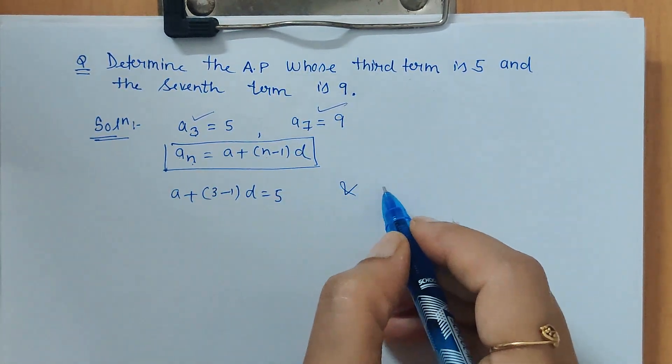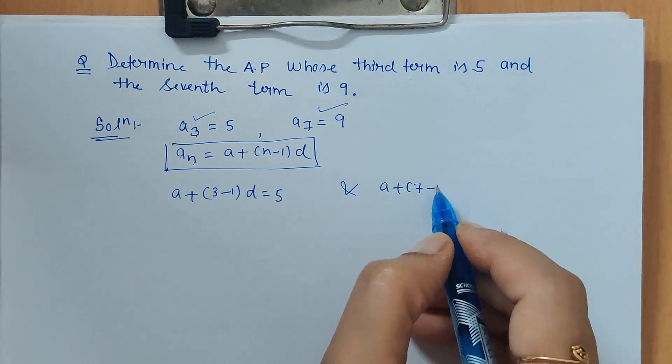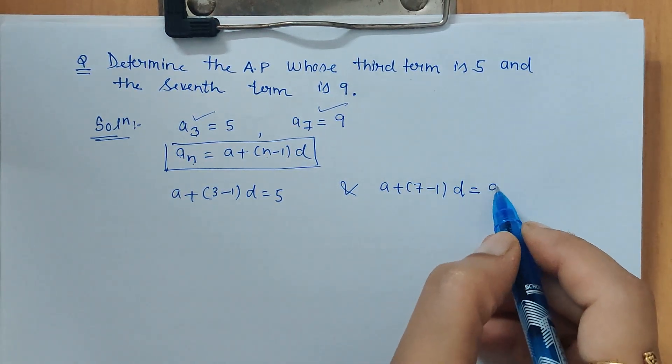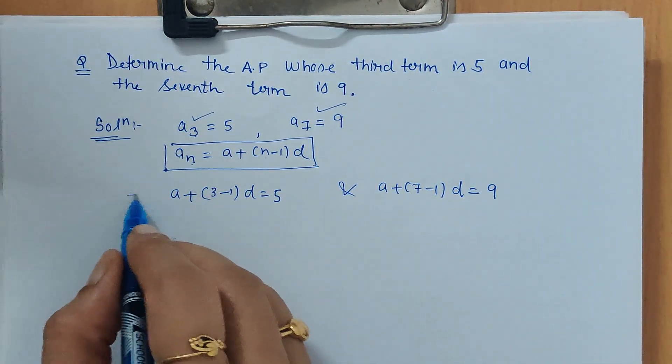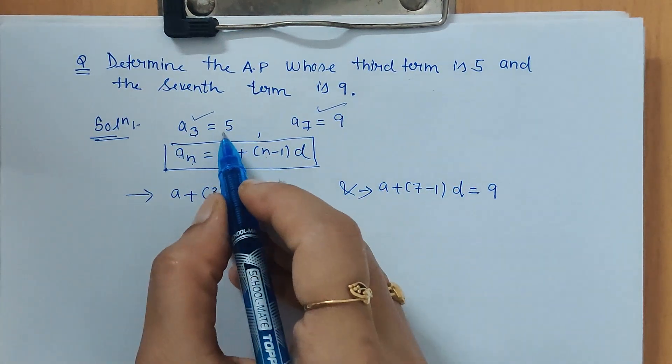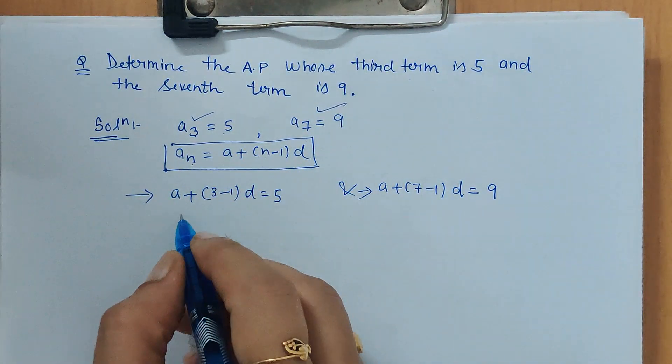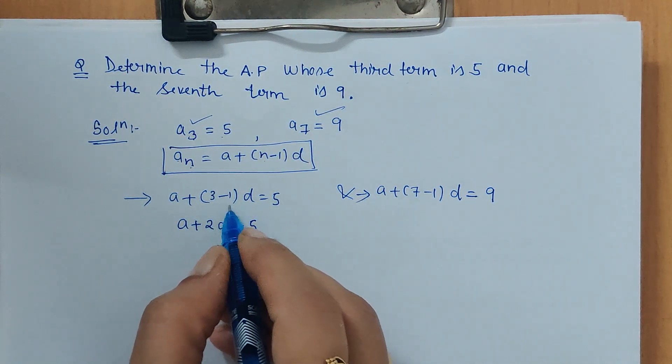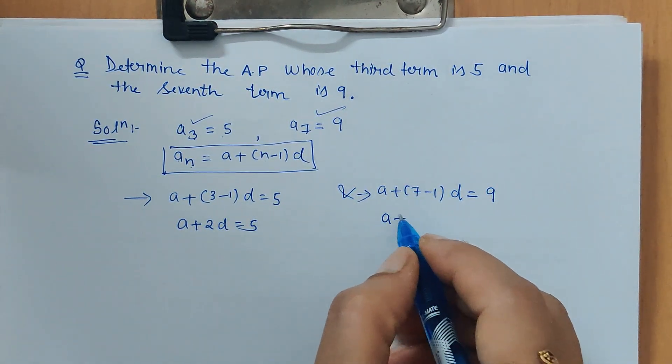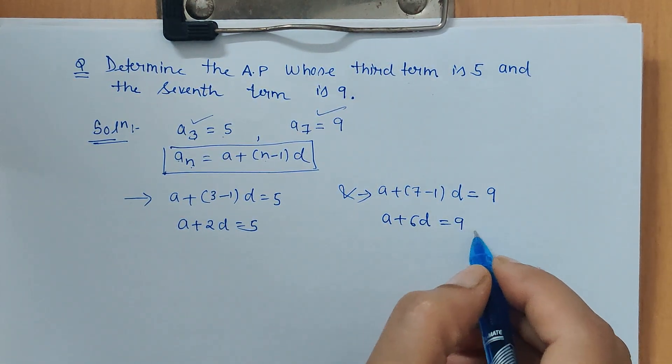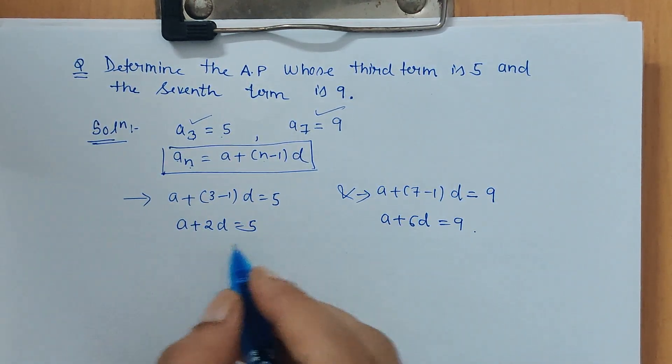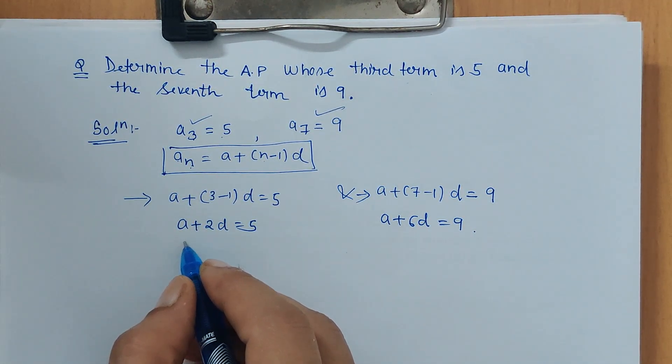These two equations are formed just by the given information. So we get a plus 2d is equal to 5, because 3 minus 1 is 2. And a plus 6d is equal to 9. Just write these two equations, one above the other.